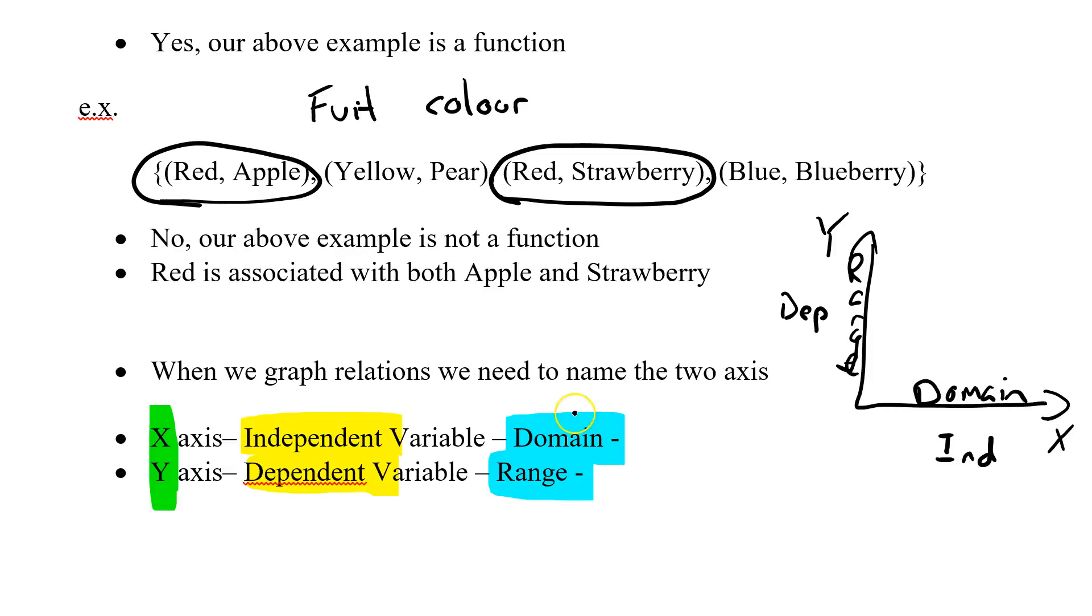So for our little example here, what is my x-axis? What's my independent variable? What's my domain? Well, it's red, yellow, red, blue. So otherwise known as the color. What is my y-axis? What's my dependent variable? What is my range? Well, it's apple, pear, strawberry, blueberry, otherwise known as my fruit.